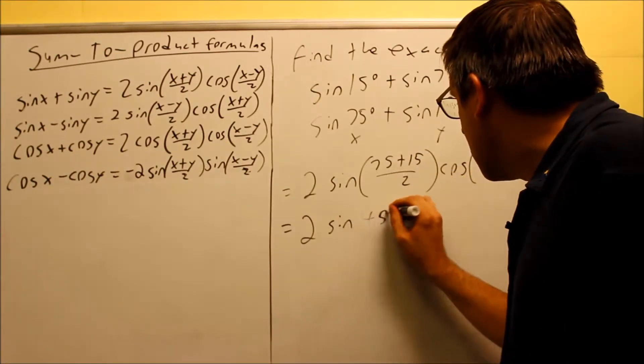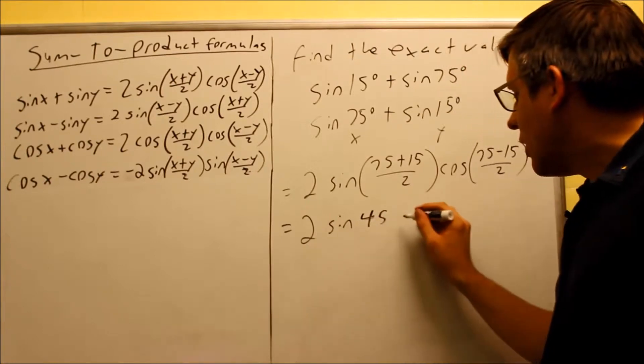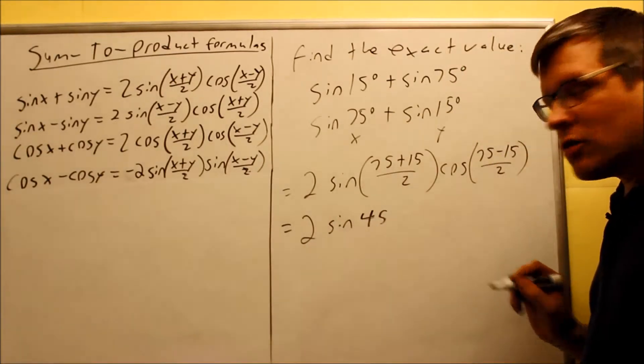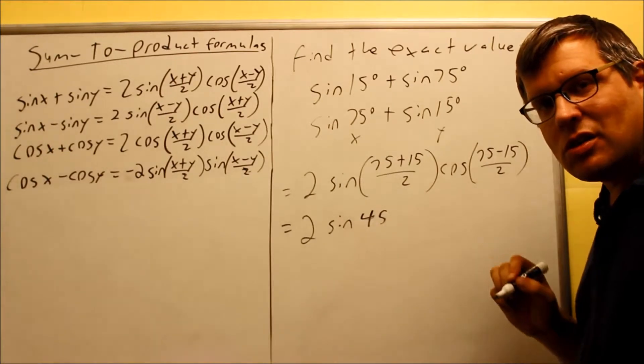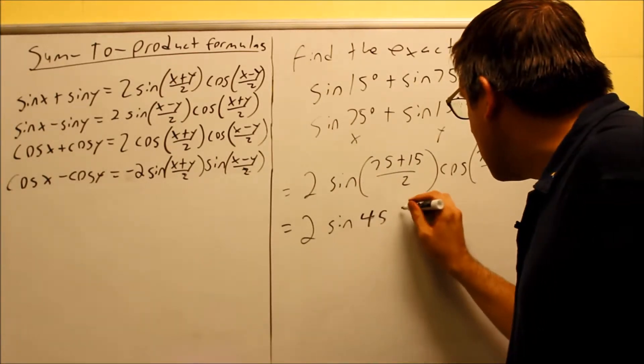Divided by 2, that's going to be sine of 45. And then I have cosine 75 minus 15 over 2. 75 minus 15 is 60. 60 over 2 is going to be 30 degrees.